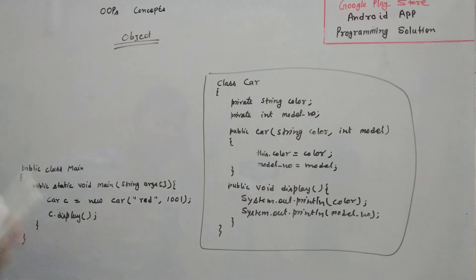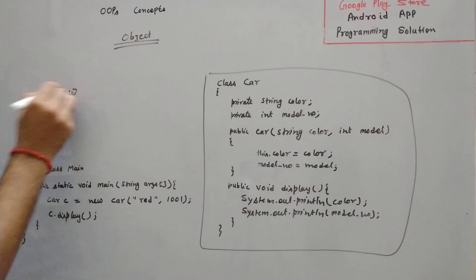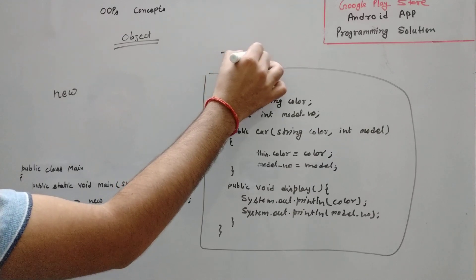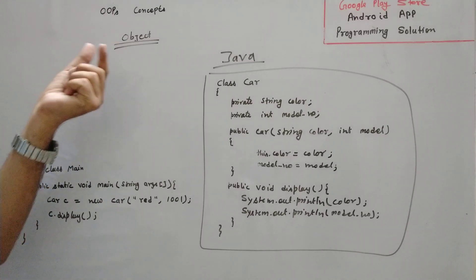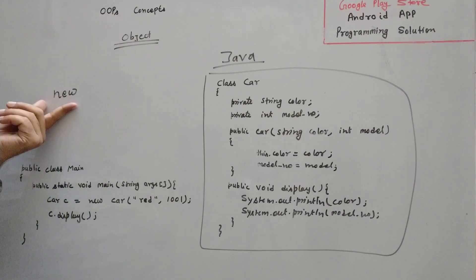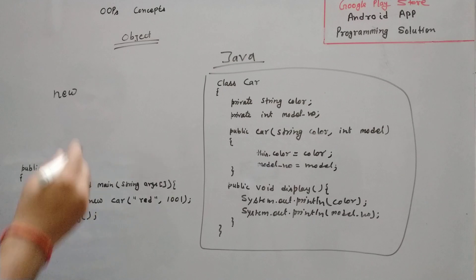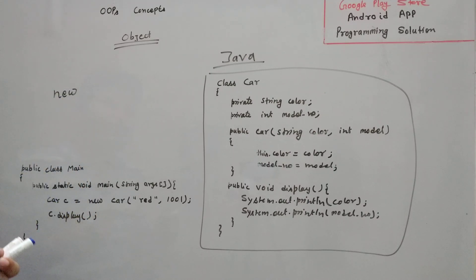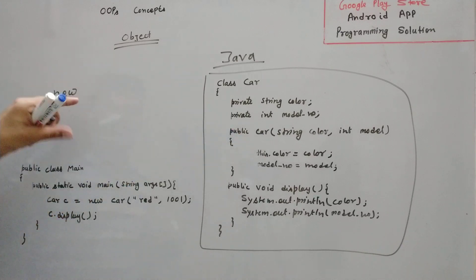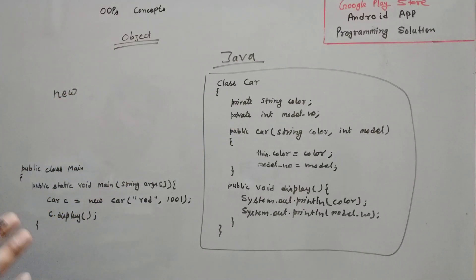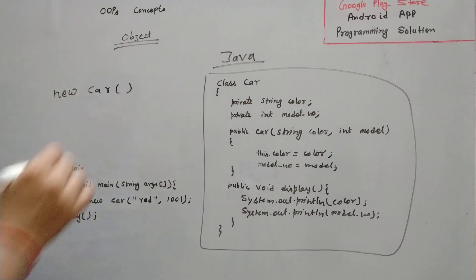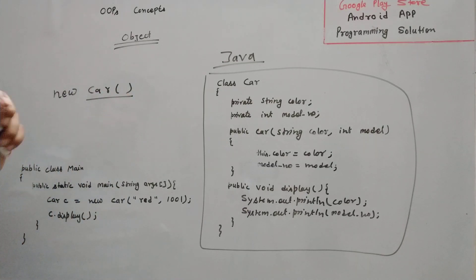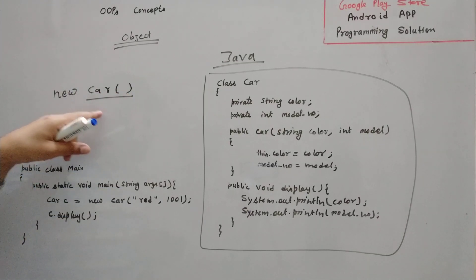We can create the object with the help of the 'new' keyword in Java. Java is a pure object oriented language, so we cannot do any kind of work without object. For creating an object, we need the 'new' keyword. After the 'new' keyword, we have a constructor or a class name. Whenever we have defined a constructor, we can call it with the help of the constructor. And whenever we don't have any constructor, there is a default constructor which is automatically defined by the compiler, so we are actually calling the default constructor.